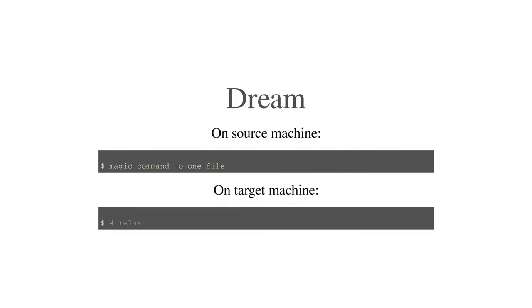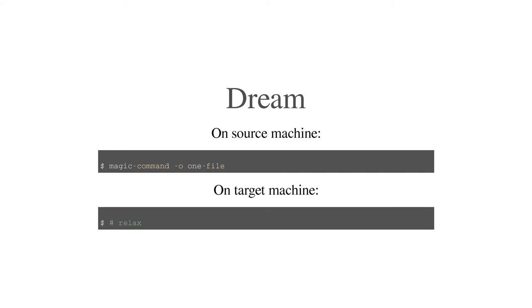So what's the dream? The dream is that I have some magic command, it produces one file, I move that one file over, and I don't have to do anything on the target machine. That's kind of where you want to be. Luckily we live in the dream world — we have PEX. Literally, you can just build one file, ship it over, and you don't have to do anything to unpack or set up on the target machine.